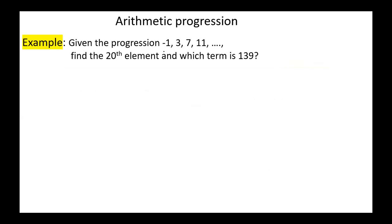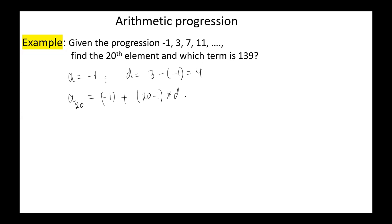For example, given the progression −1, 3, 7, 11, etc., find the 20th element and which term equals 139. In this sequence, the initial term A = −1 and the common difference D = 3−(−1) = 4. So A_20 = −1 + (20−1)·4 = −1 + 19·4 = −1 + 76 = 75.